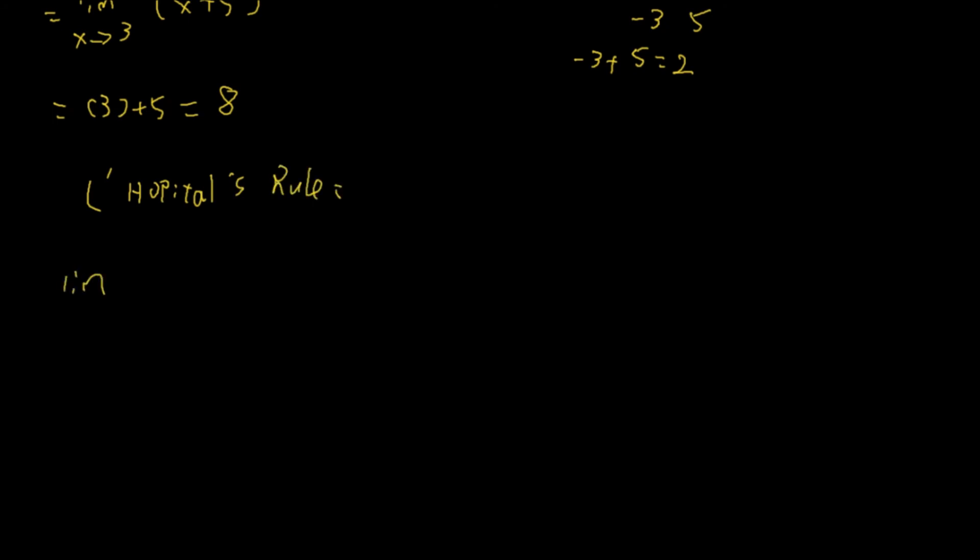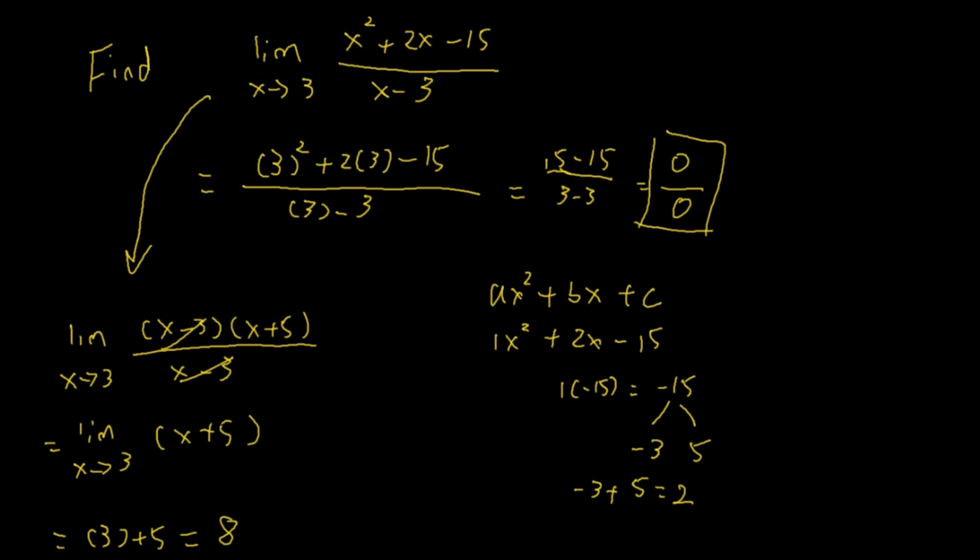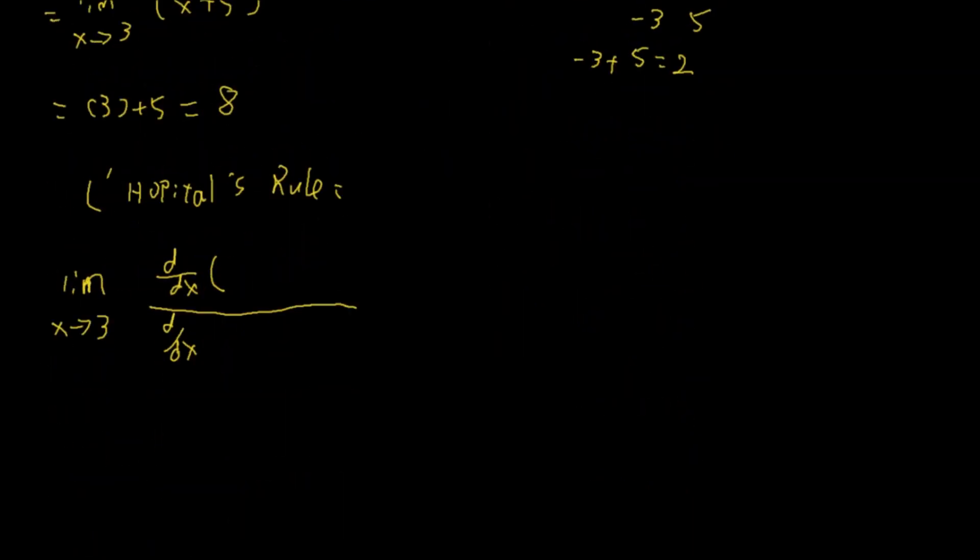Limit as x approaches 3, I'll take the derivative of the numerator and the derivative of the denominator. What would be the original function? x squared plus 2x minus 15, and this one is x minus 3.